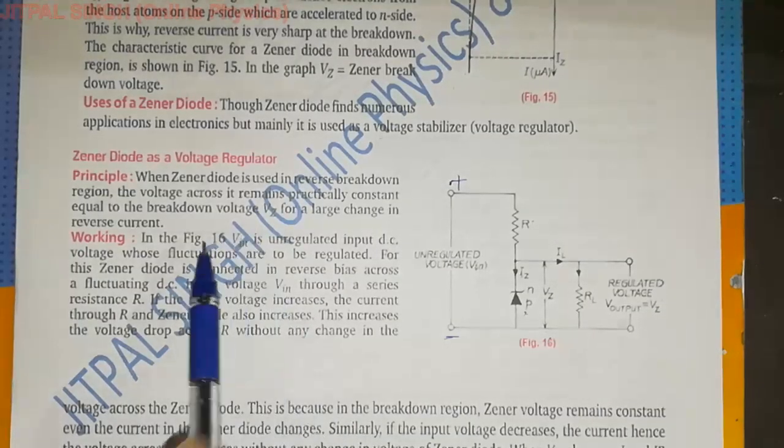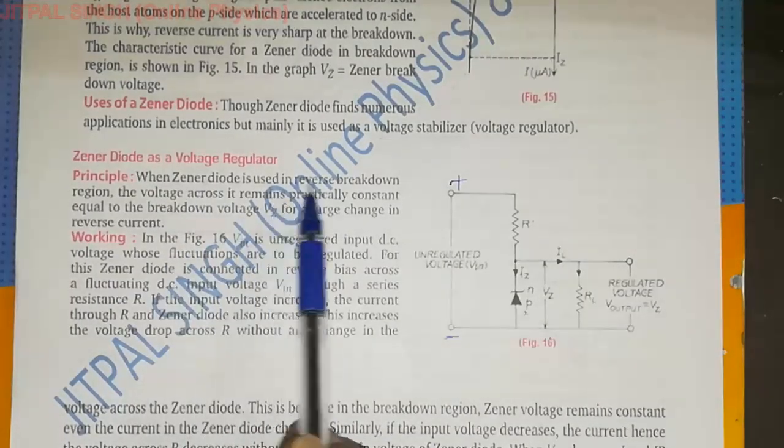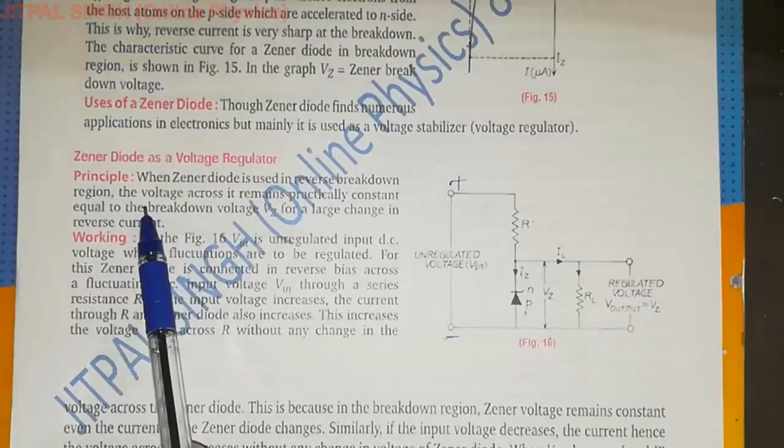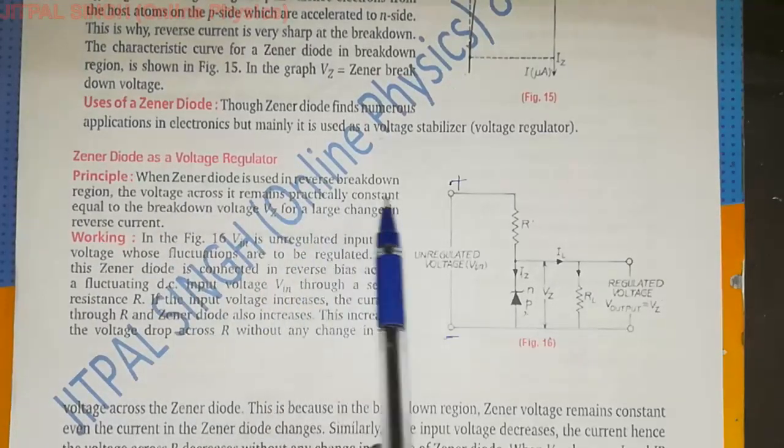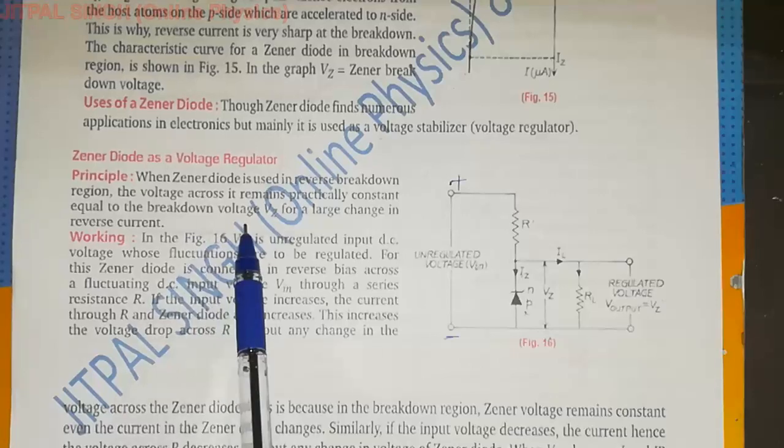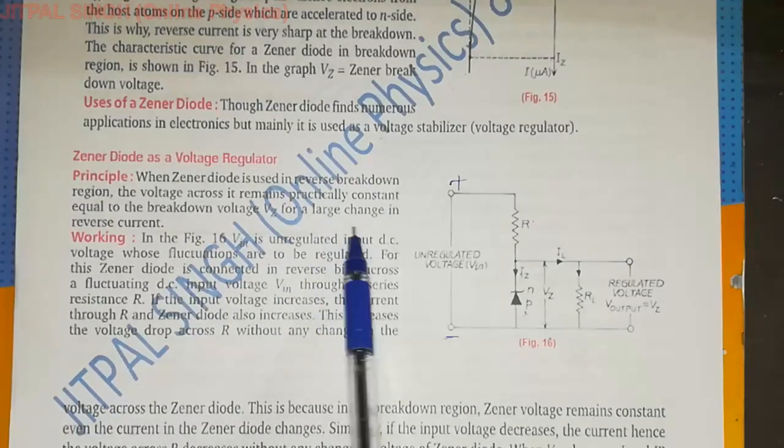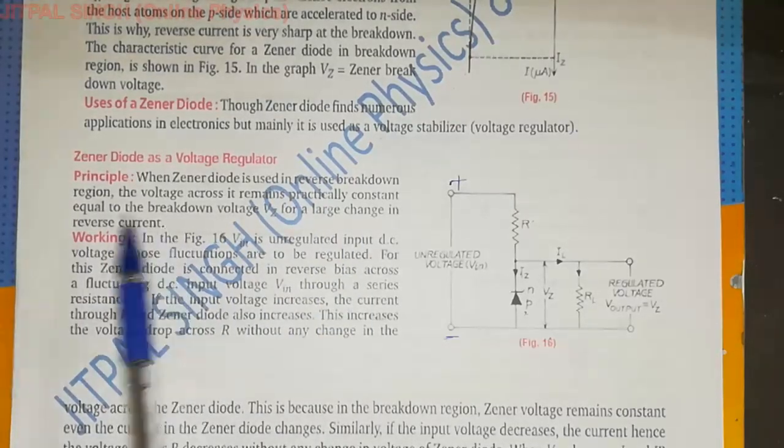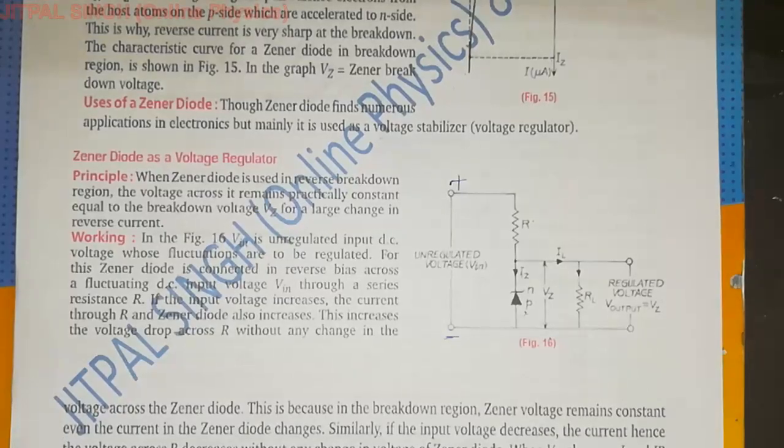Now, when Zener diode is used in reverse breakdown region, the voltage across it remains practically constant, equal to breakdown voltage Vz, for large change in reverse current. I will continue in the next video. Thank you.